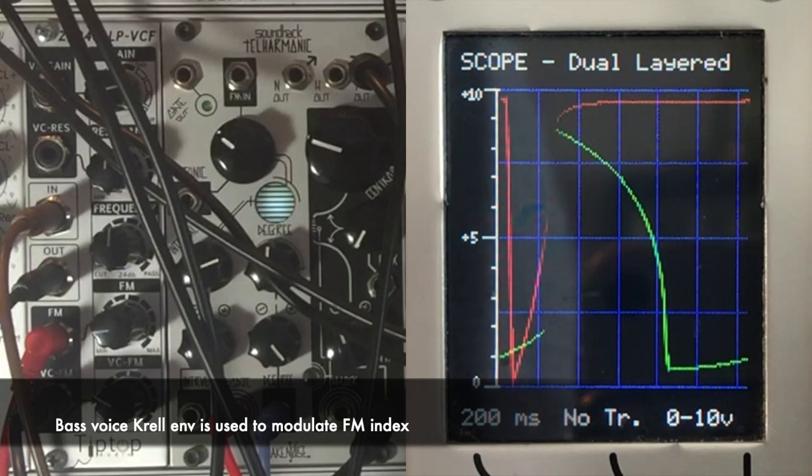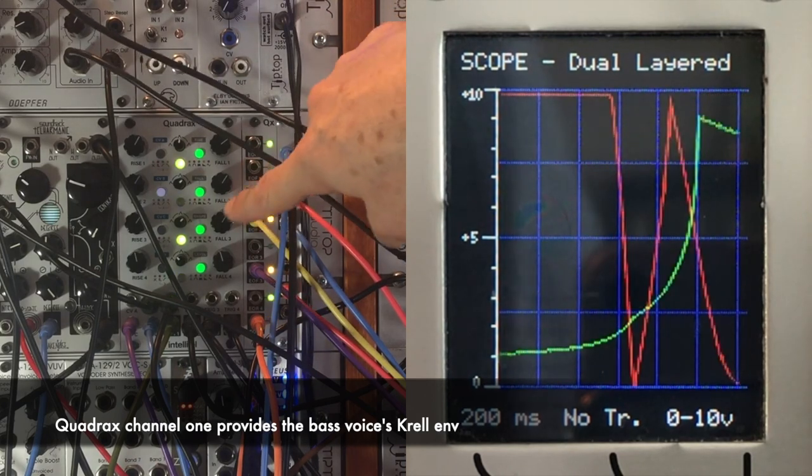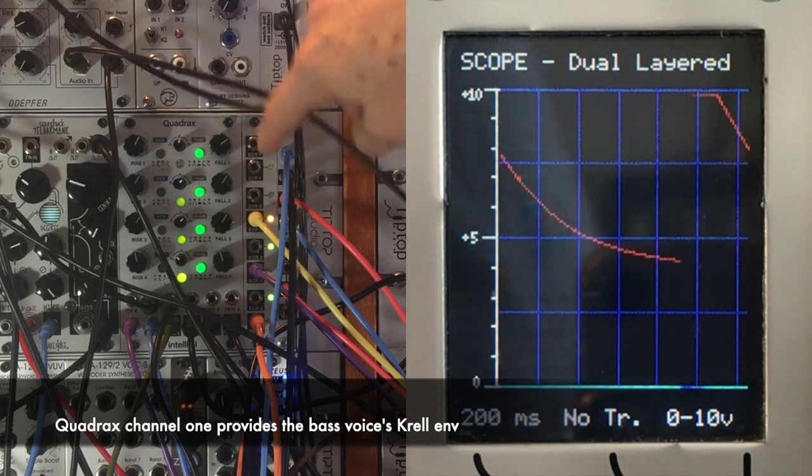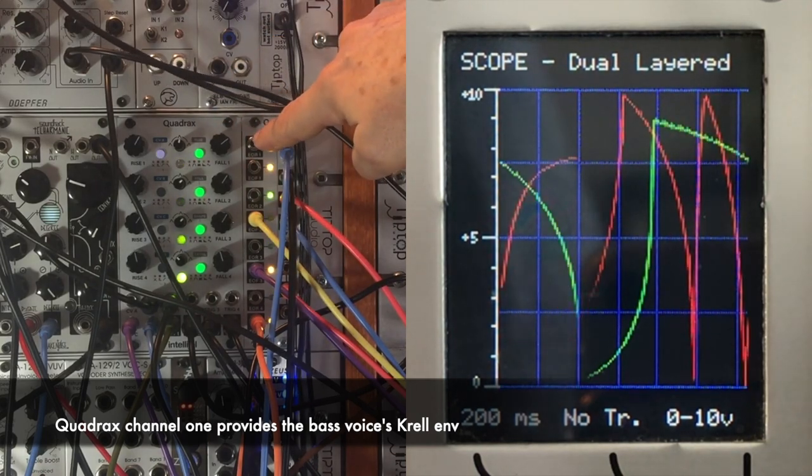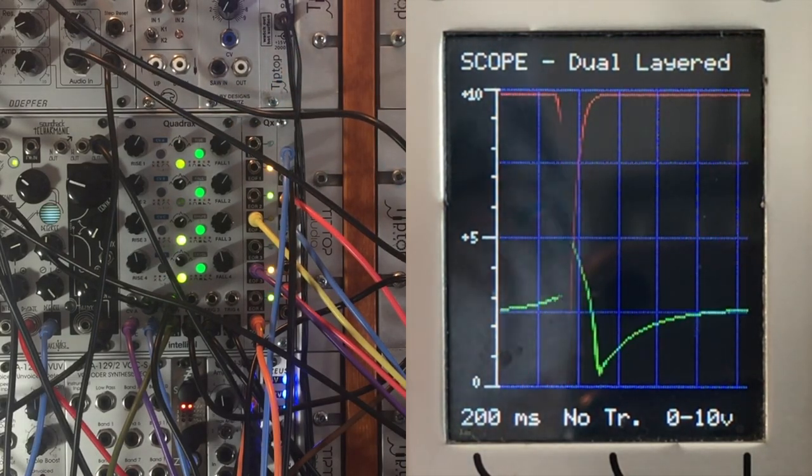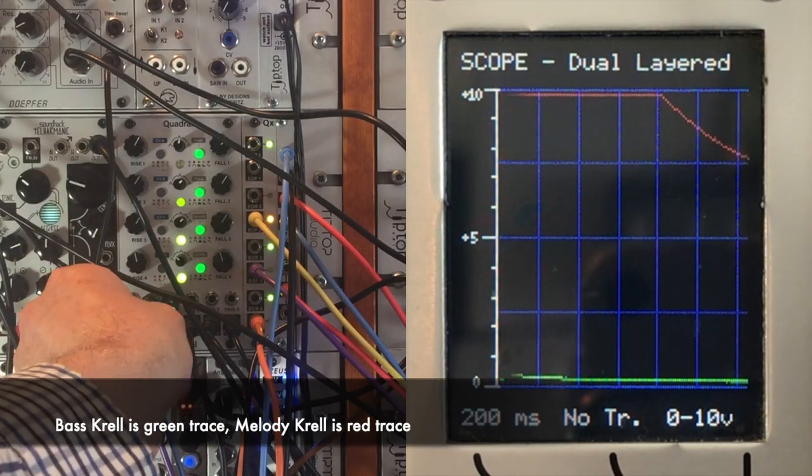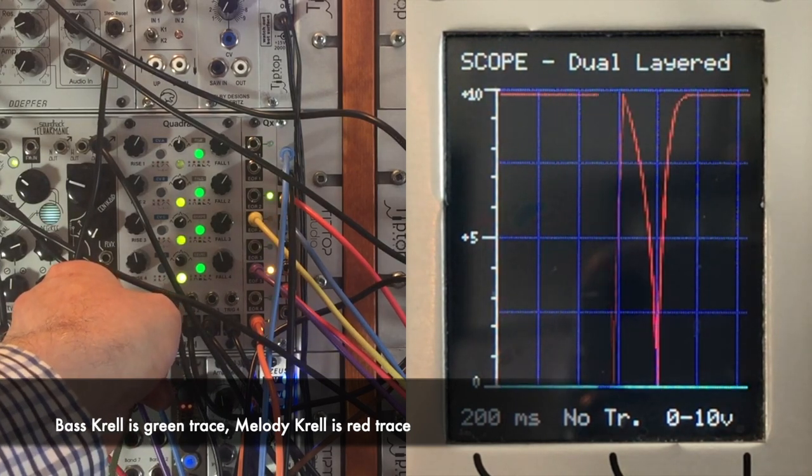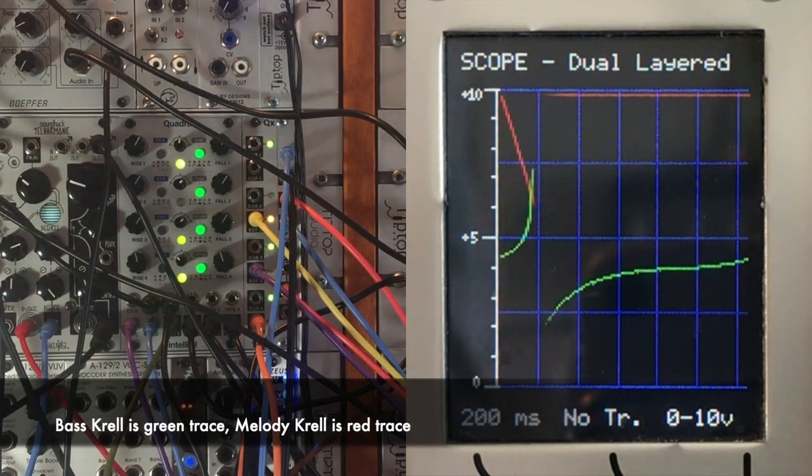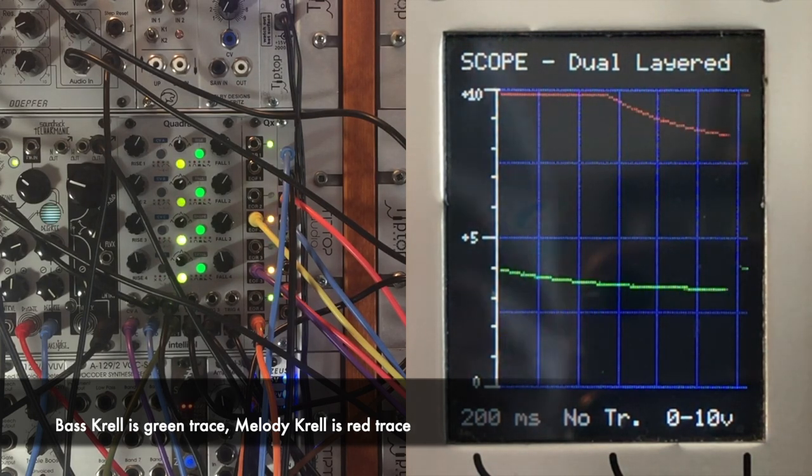The function generator, the envelope for our bass voice, comes from channel one, so now we've used all four channels all in cycling envelope mode on a quadrax, and channel one is providing the function generator for our bass voice. And you can see on our scope if I pop out channel one's envelope you'll see the green trace will drop and the bass notes will drop out. So the green is our bass notes, the red is the original melody corral envelope that we've been looking at in previous videos.